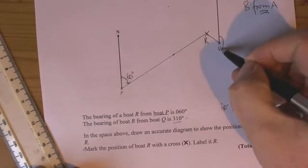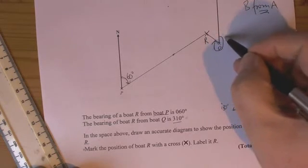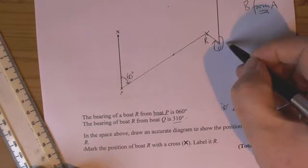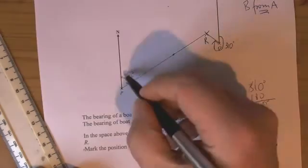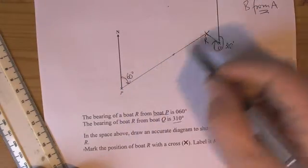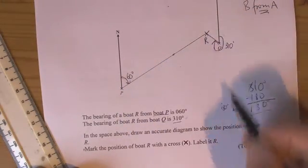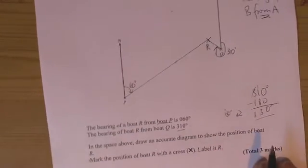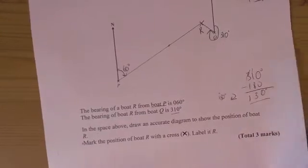So what we've done then is we've measured 310 going in a clockwise direction from north to get that bearing, and then we measure 60 degrees from there. We've joined our construction lines, and where they join is where the position of the boat is. So that's one type of bearings question, where you've got to actually draw a bearing onto a picture.